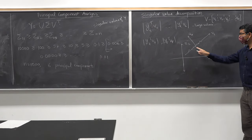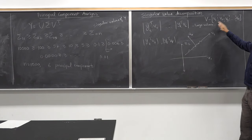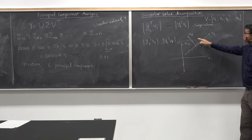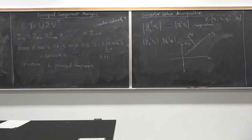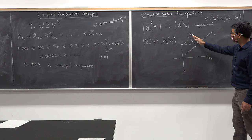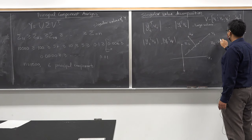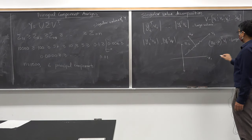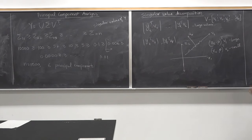Since N was equal to 2 in the two-sensor example, I only have V1 and V2. V1 is along the line where all the data lies. V2 is orthogonal to that line. So I expect that Xt minus mu transpose V1 will be some large number, but Xt minus mu transpose V2 will be a small number for any normal data point.